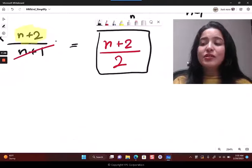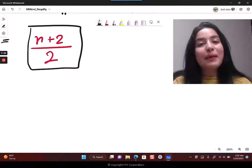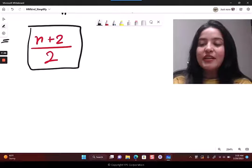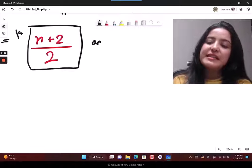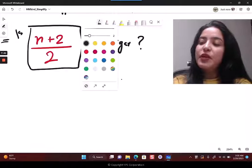So is n plus 2 over 2 an integer? How is that going to happen? n plus 2 right now is being divided by 2, so if it's an integer, this means is n plus 2 divisible by 2?